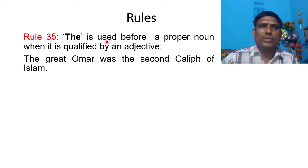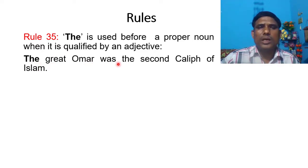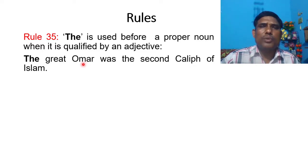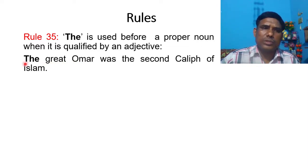Rule number 35: THE is used before a proper noun when it is qualified by an adjective. For example, 'The great Omar was the second caliph of Islam.' Omar is a proper noun, and 'great' is an adjective that qualifies the noun Omar. So, the article THE is used.